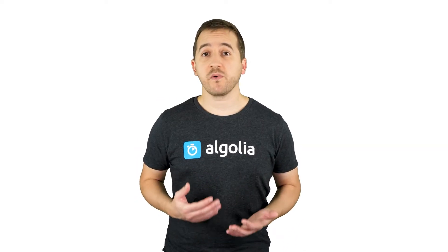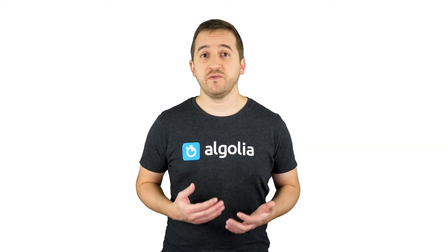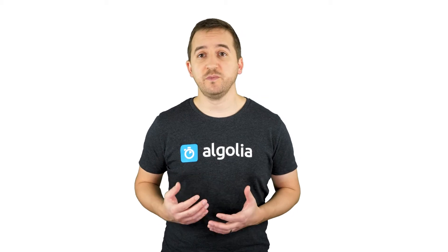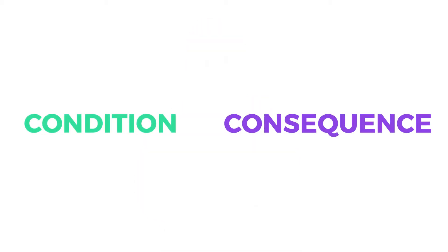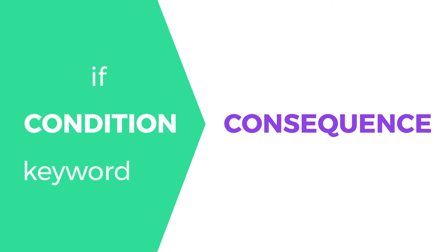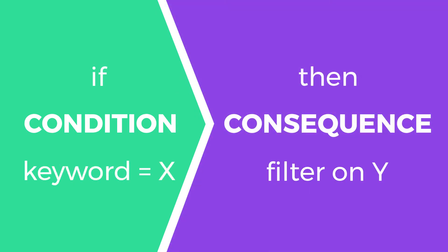The logic behind query rules is straightforward. You set up rules that are composed of two parts: a condition and a consequence. If condition X is met, then apply consequence Y. With that process, specific behaviors or edge cases that were previously very hard to deal with are now solved in an elegant way.